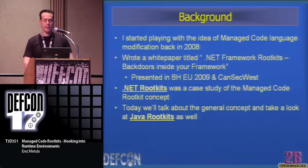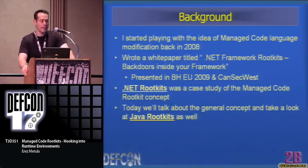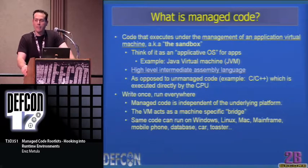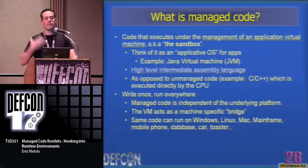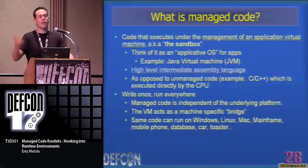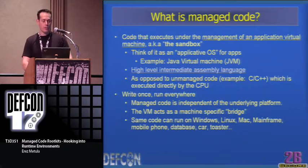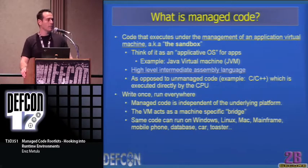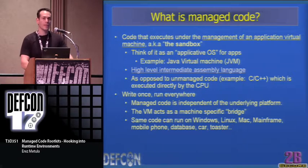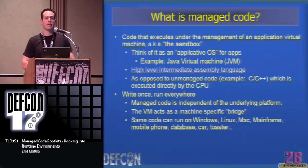This is how Java bytecode looks after disassembling — it looks kind of like assembly code, but it's not. If you give the CPU this kind of code, it will not understand — the CPU does not understand virtual languages. The magic is performed by the virtual machine, which translates the high-level intermediate language to machine-specific assembly code.